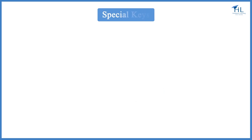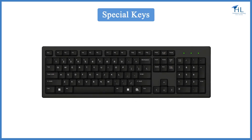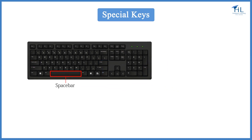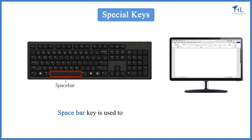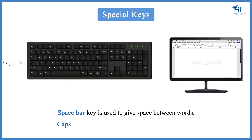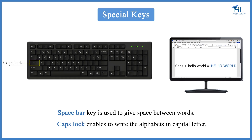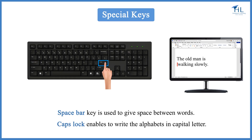Let us see the functionality of some special keys like Space Bar, Caps Lock, and Enter. The Space Bar key is used to give space between words — pressing it once inserts a single space. Caps Lock enables writing alphabets in capital letters. While typing, if you tap the Enter key, it will drop the cursor down to the next line. There are two Enter keys on one keyboard.